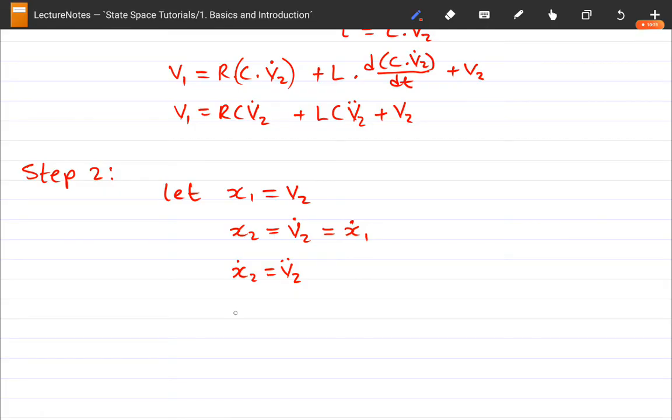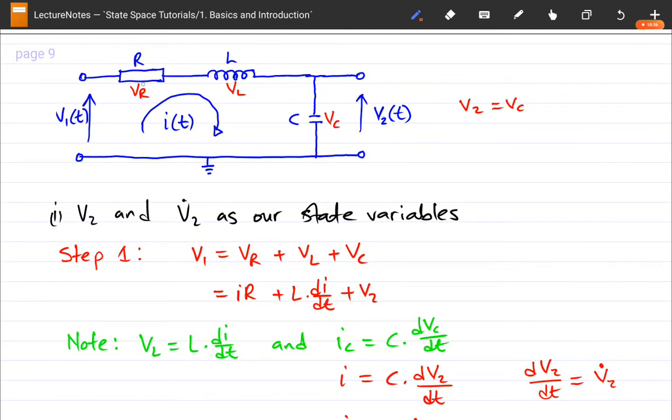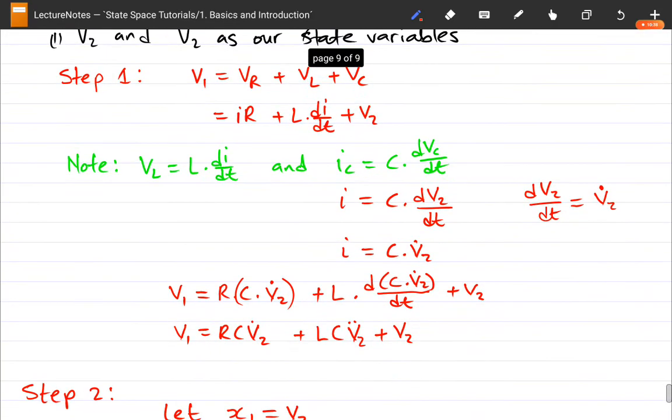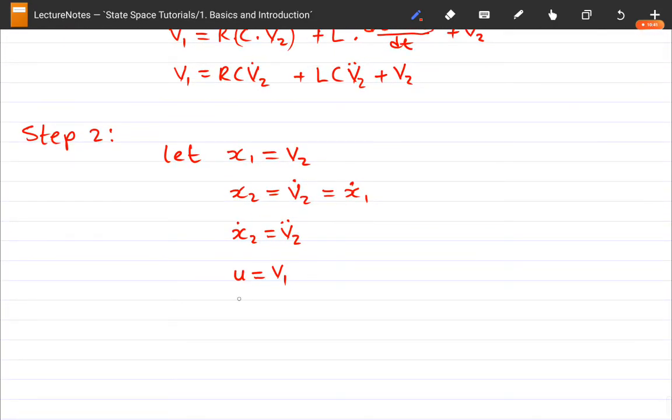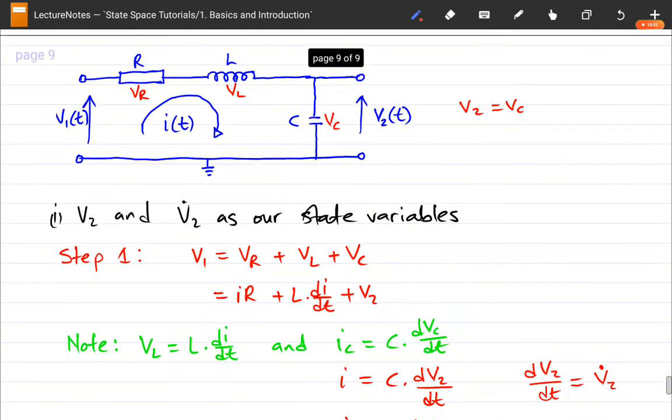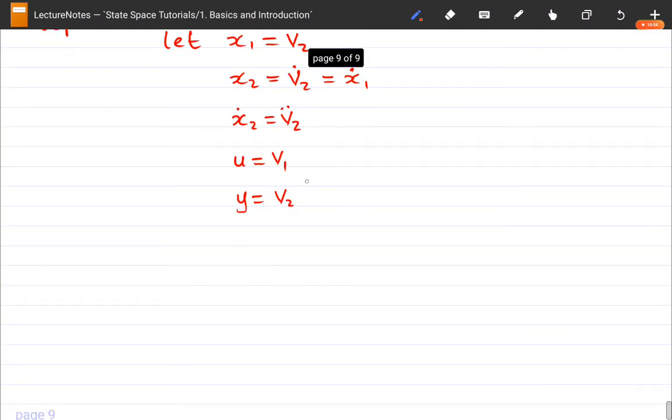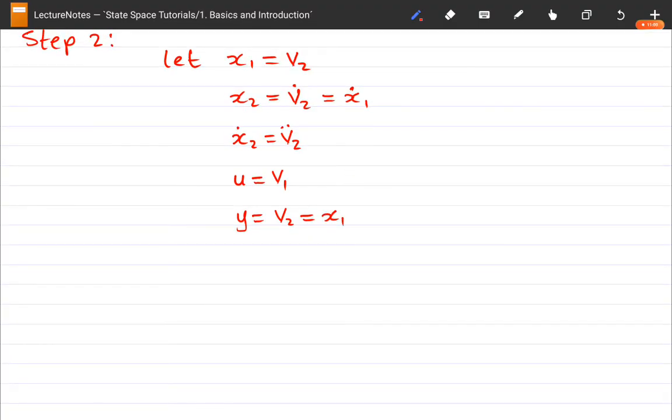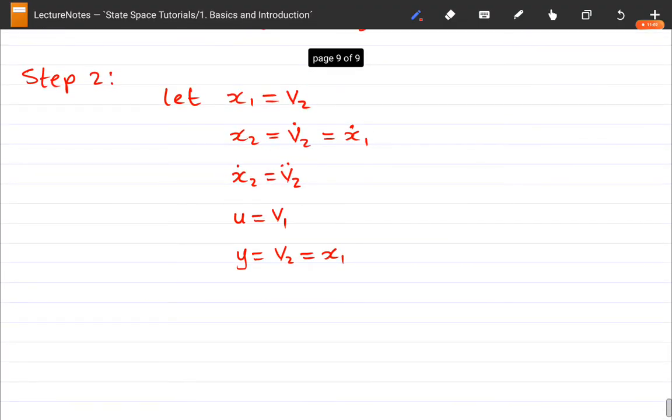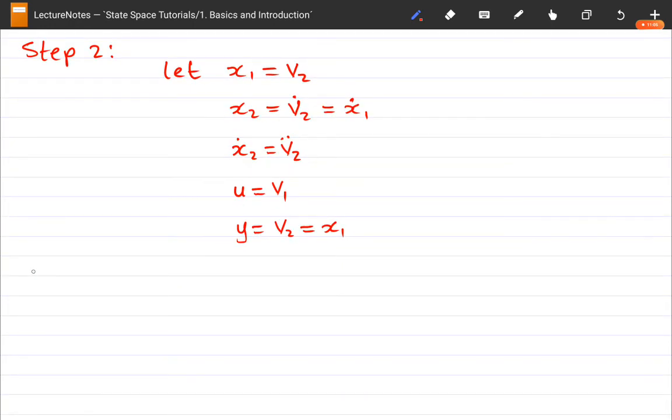And then we need an input vector. So for our input vector for this one, it's just going to be V1, because that's the input voltage into the circuit. And if you want to be complete, we can say we also need an output vector. An output vector is going to be V2, which is our capacitor voltage. And V2, we can clearly see here, it is x1. So now we have all our state variables. Now we move on to step 3.